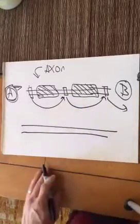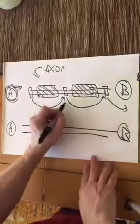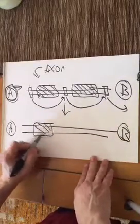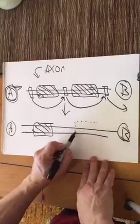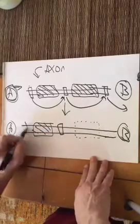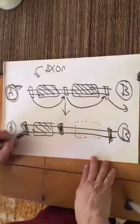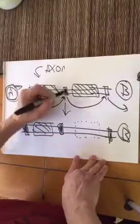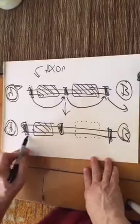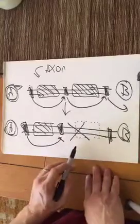So the first thing to understand is what happens in the setting of an MS attack to that same axon. Here we have myelin, but here the myelin has been eaten away. So we don't have any myelin there. And these are those nodes I was talking about. We'll color them in. So now when you want to send an electrical message from A, it jumps, but then it can't do anything, and you have what's called conduction block.